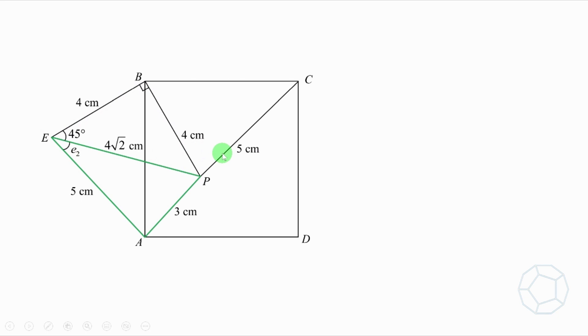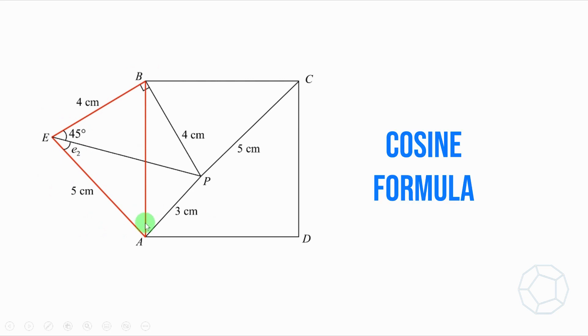Moreover, if we look at the green triangle EAP, then we can also figure out the angle E2. Lastly, we're going to look at the red triangle EAB. With two sides and an included angle, we can find out the length of AB by cosine formula. Therefore, the area of the square is AB squared. That's all about the thinking process. Let's jump to the detailed solutions.